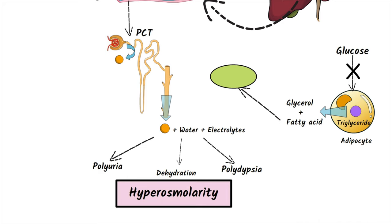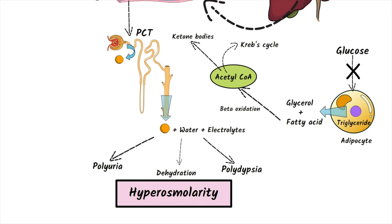The free fatty acids produced by lipolysis get converted into acetyl-CoA through beta-oxidation. This acetyl-CoA usually goes to the Krebs cycle, but as there is a large amount of available acetyl-CoA, the Krebs cycle gets saturated and starts shifting the acetyl-CoA into another metabolic pathway, which is synthesizing ketone bodies. This conversion process from acetyl-CoA to ketone bodies is called ketogenesis.